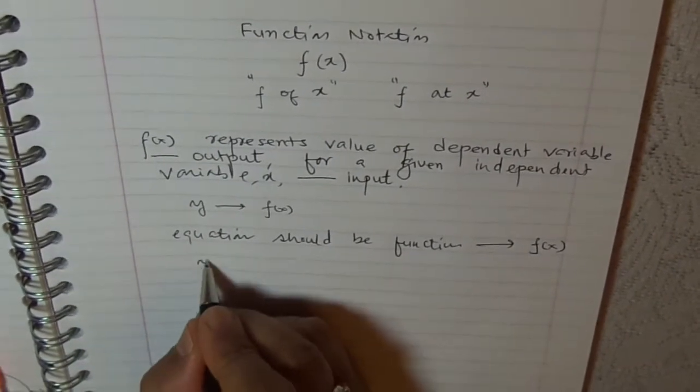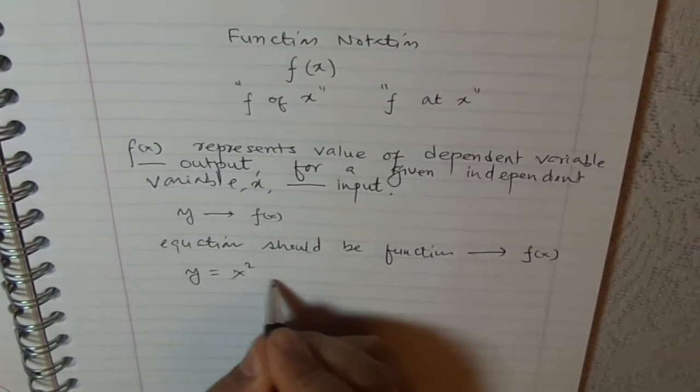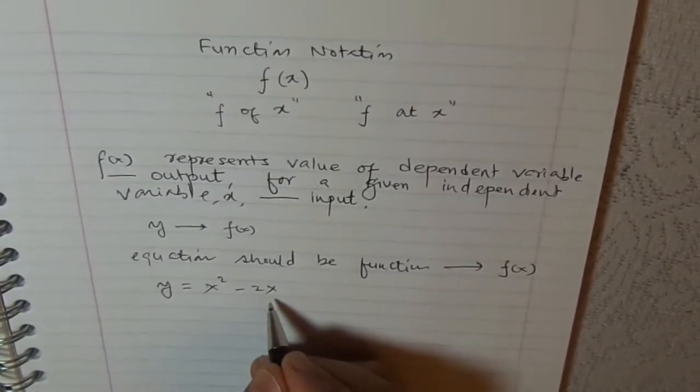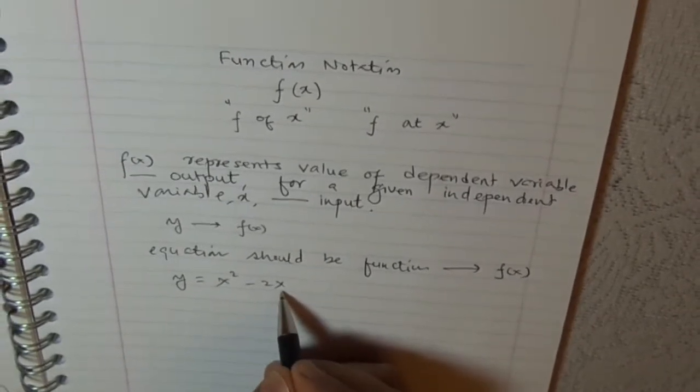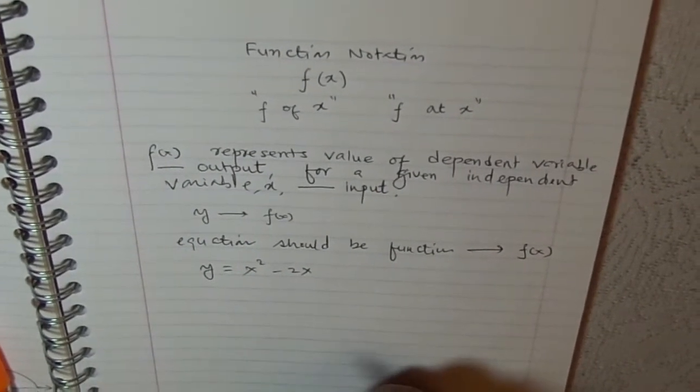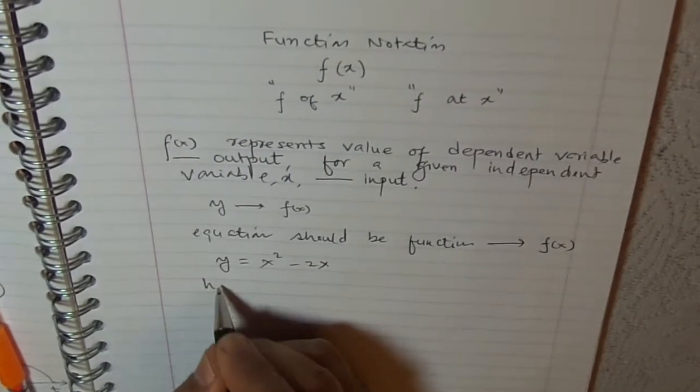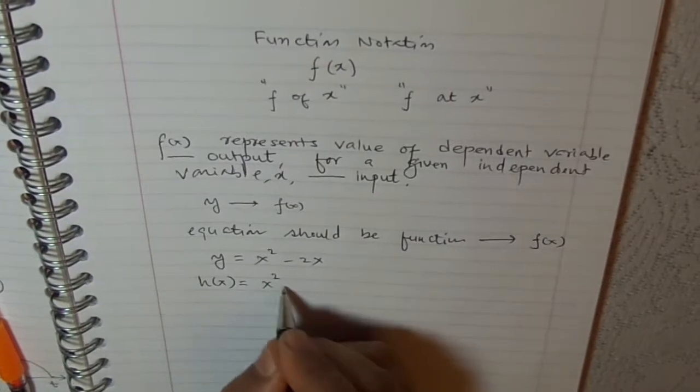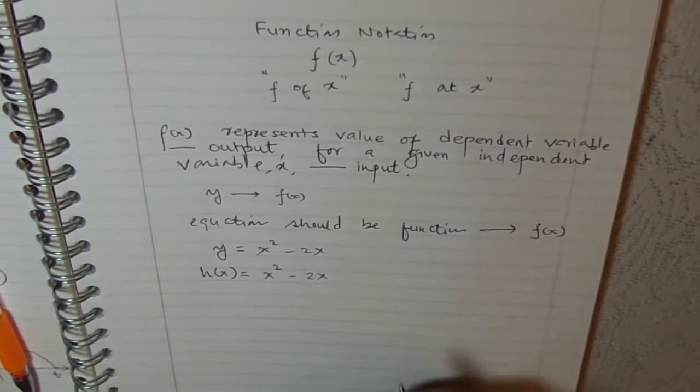Let's say we have equation y equals x squared minus 2x. Here, this is a function. Since for every value of x we will have unique y. Let's call this function h(x). So h(x) equals x squared minus 2x.